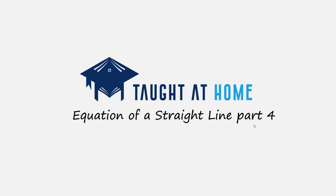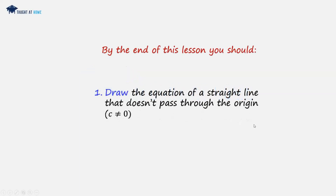Equation of a straight line, part 4. We're going to draw straight lines that don't pass through the origin. So in the equation, the y-intercept c does not equal to 0.